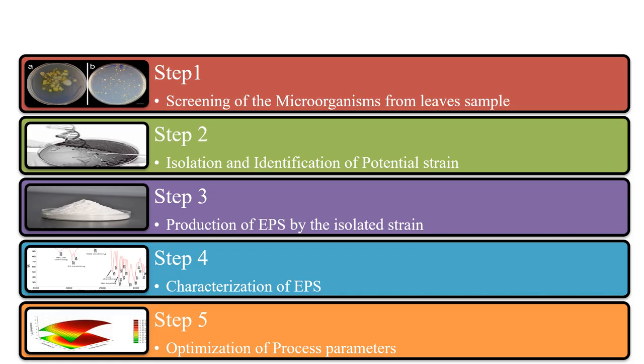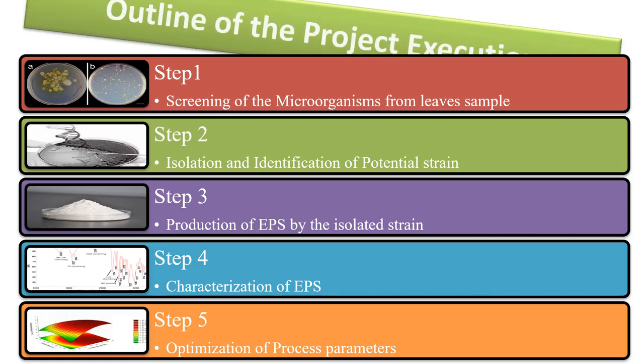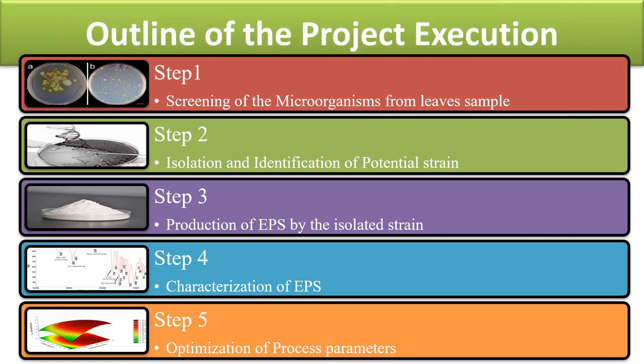Here is the outline of our project execution. First, we screened microorganisms from the samples. We isolated and identified a potential strain. Followed by the production of EPS in the fermentation media. The produced EPS was characterized. Finally, the physical parameters were optimized.